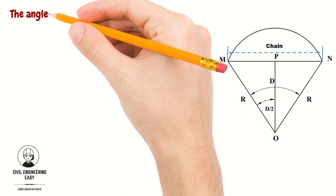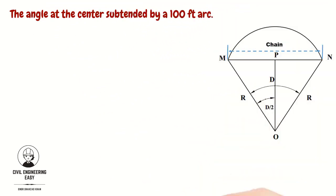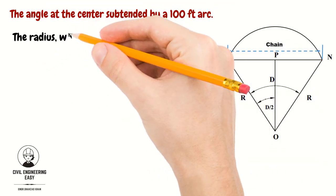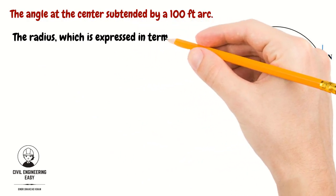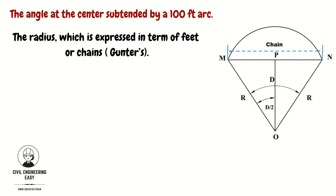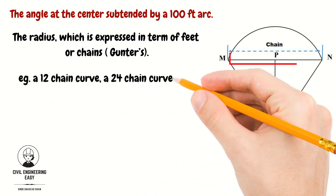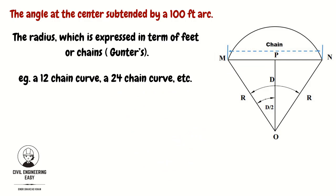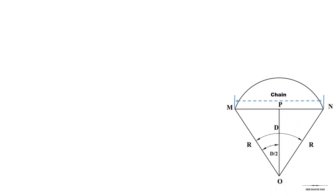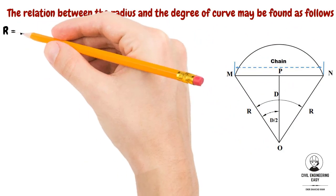In highway practice, the degree of the curve is defined as the angle at the center subtended by a hundred-feet arc. While in England, a curve is defined by the radius which is expressed in terms of feet or chain — for example, a 12-chain curve or a 24-chain curve. When expressed in feet, the radius is taken as a multiple of hundred. The relationship between the radius and degree of curve may be found as follows, referring to the figure.